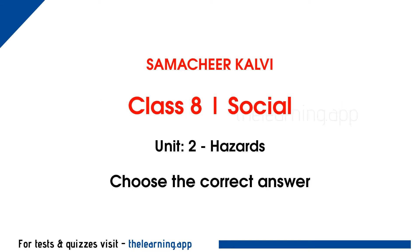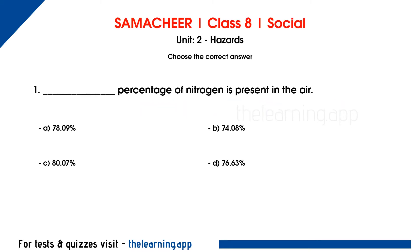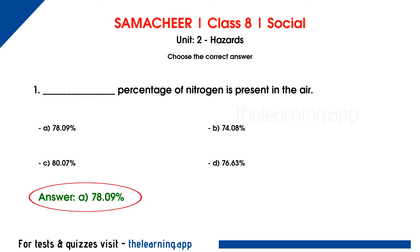First, choose the correct answer. First question: the correct answer is option A, 78.09%. In the atmosphere, we are going to talk about nitrogen gas, which makes up 78.09% of the atmosphere.